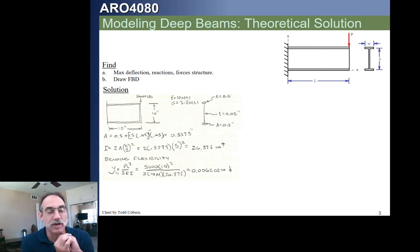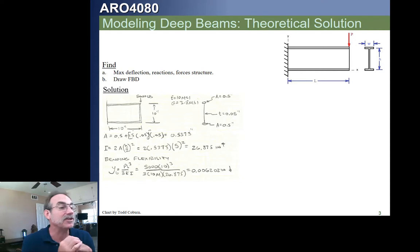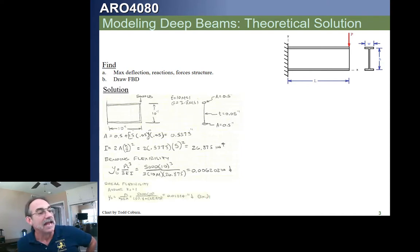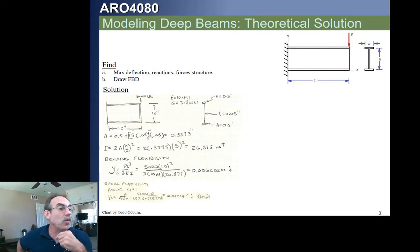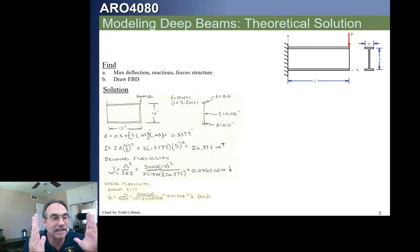This is what most folks in industry would report as the deflection of a beam like this, because they would just go to a simple formula like the ones in your handbook appendix — plug in the length, the moment of inertia, the force, and calculate a deflection of 0.0062 inches. Now, if we were to account for the shear flexibility of this beam, which is normally neglected, the shear flexibility alone gives us 0.01224 inches of deflection if our shear factor is 1. Because this beam is so short relative to its depth, it actually deflects about twice as much in shear as it does in bending.